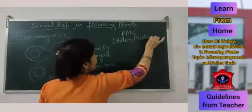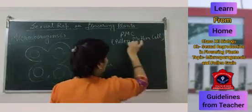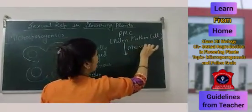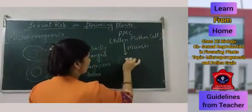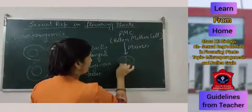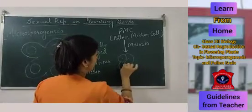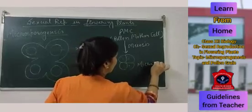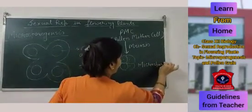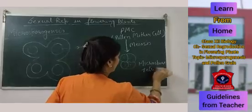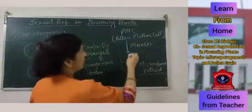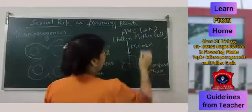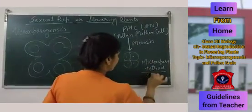The PMC will undergo meiosis and it will give rise to a microspore tetrad. The ploidy of this PMC is 2N; it is diploid, while the microspore tetrad is N, meaning haploid.